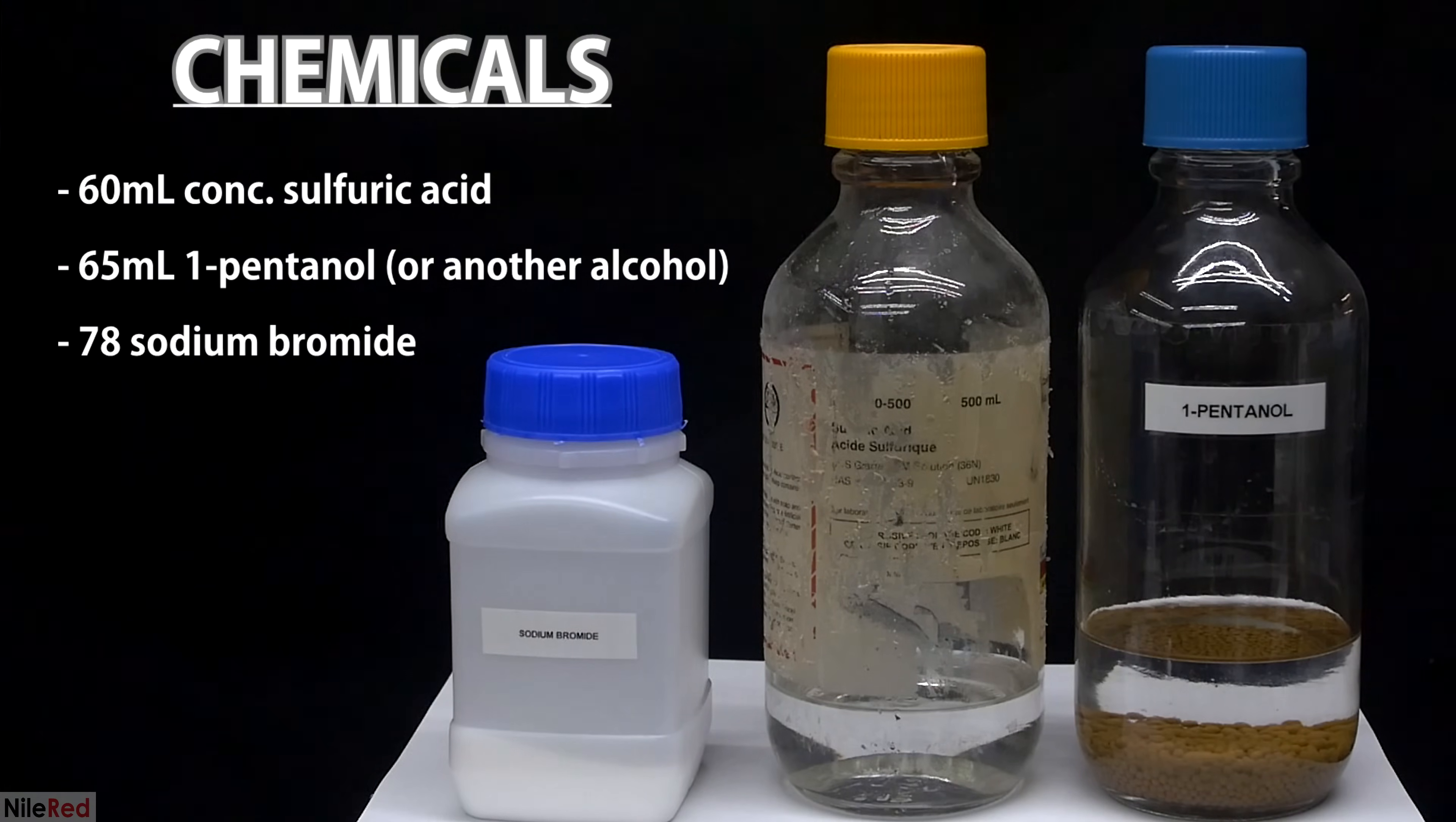For this preparation, we need three main things: sodium bromide, concentrated sulfuric acid, and 1-pentanol. In terms of quantities, I used 78 grams of sodium bromide, 65 milliliters of 1-pentanol, and 60 milliliters of concentrated sulfuric acid.